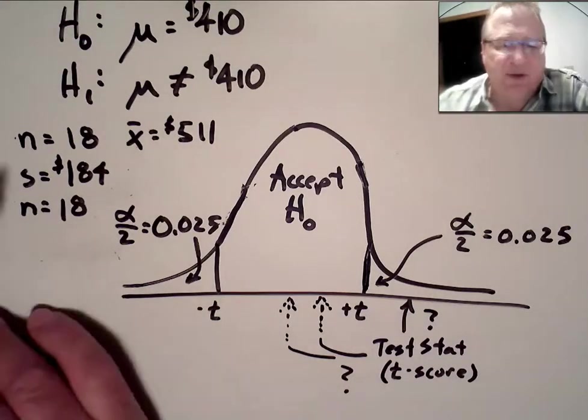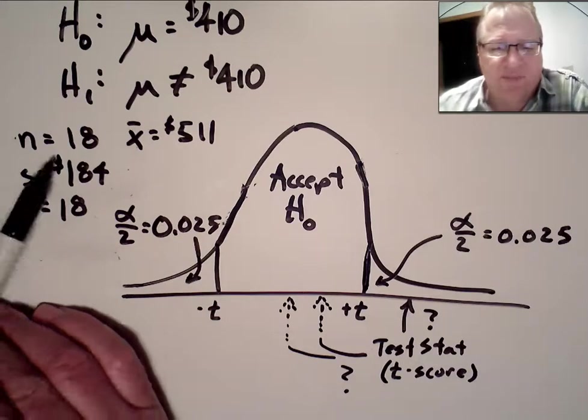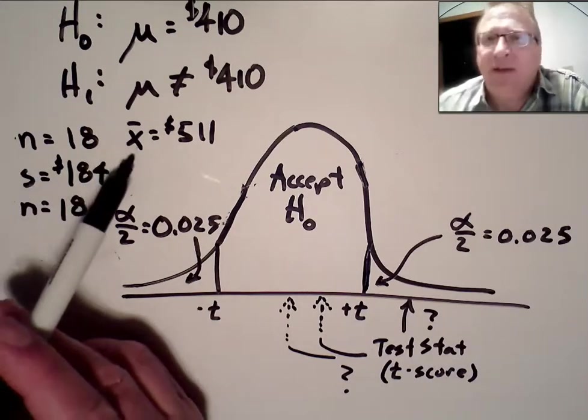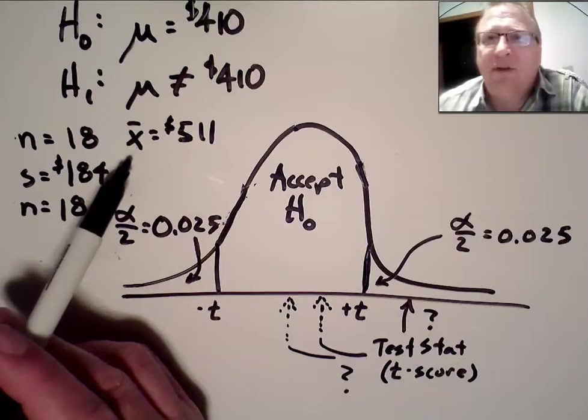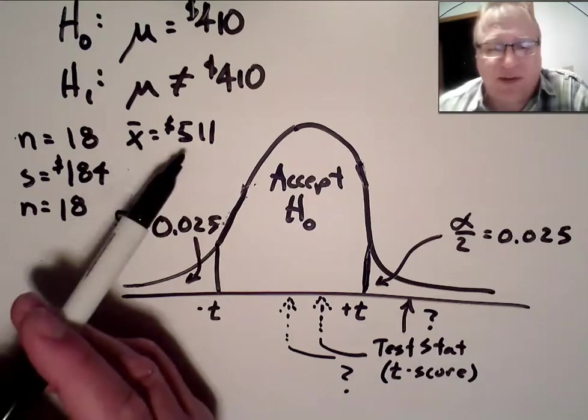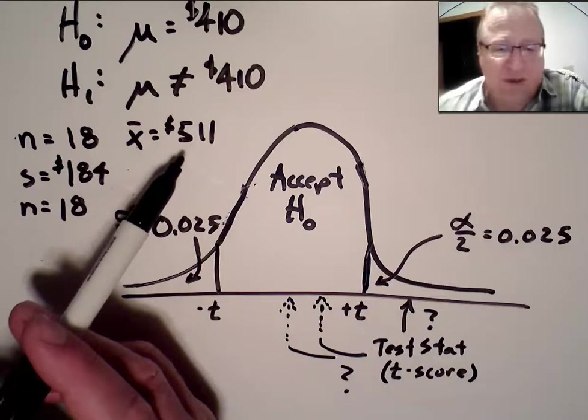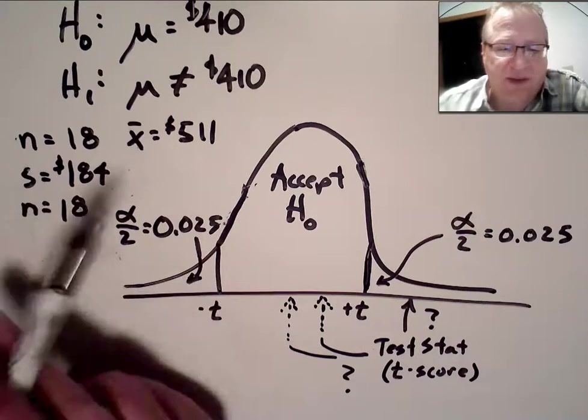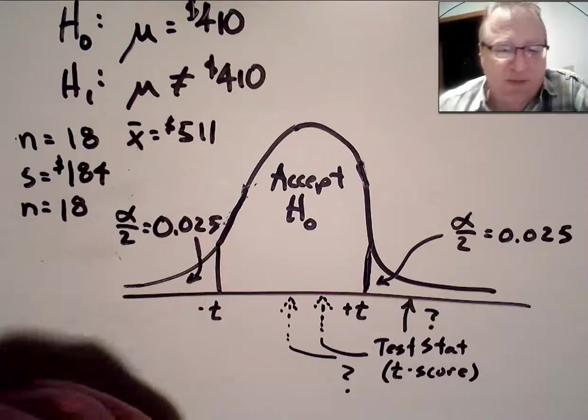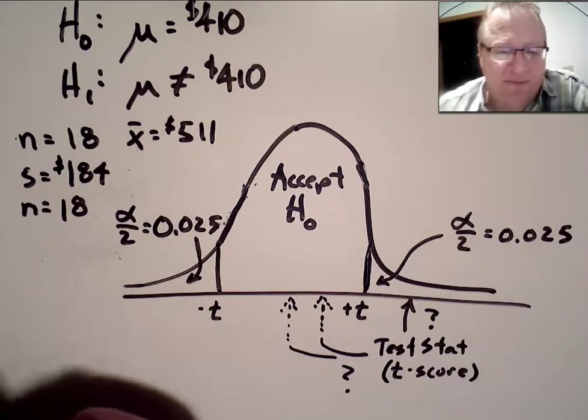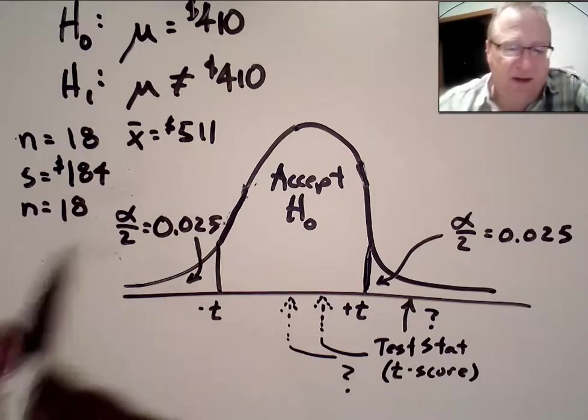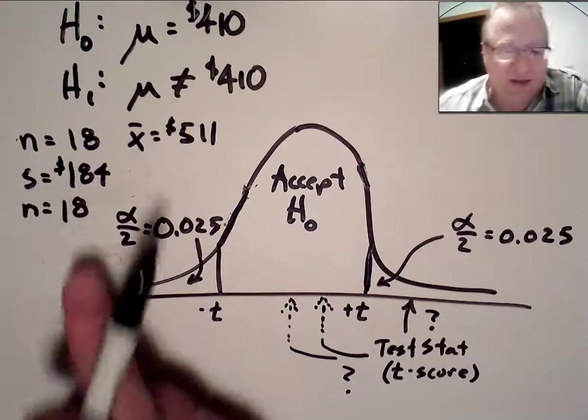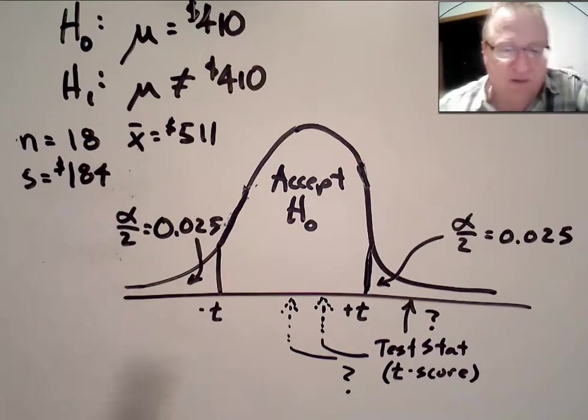We took a sample of 18 customers, and we found that the sample mean of the dollars in their accounts was $511, which appears to be quite a bit more than $410. The standard deviation based on those 18 samples we took was $184. And it's so important that I had to state it twice, didn't I? Yes.